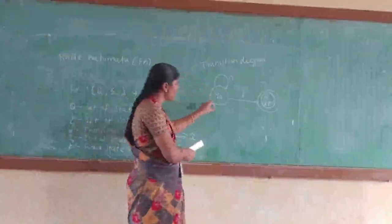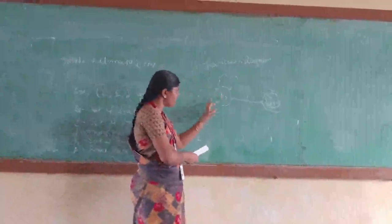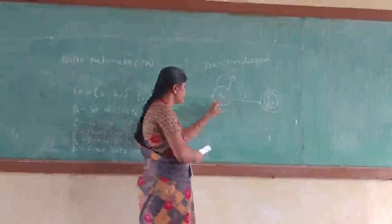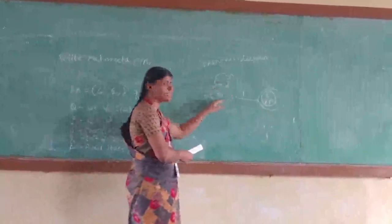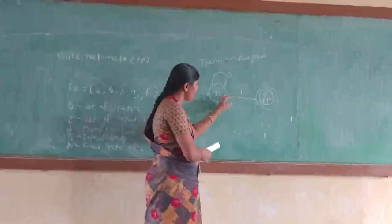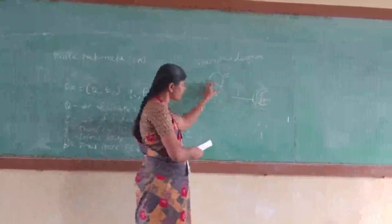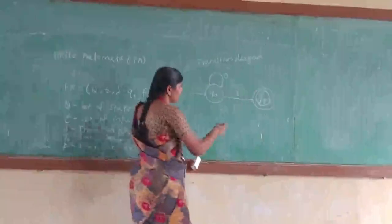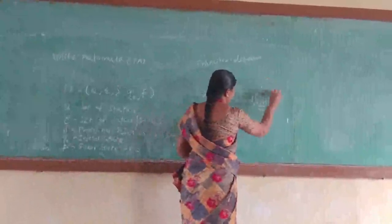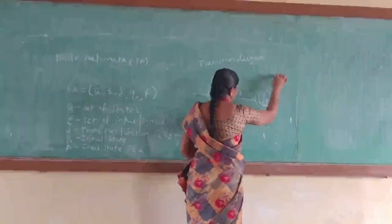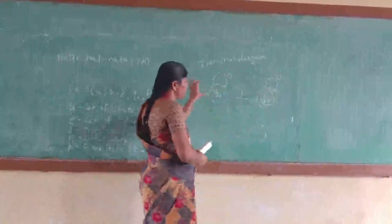From this transition diagram, we can understand: q₀ is the initial state and also the final state. On input 0, it goes to the same state; on input 1, it also goes to the same state. This is the transition diagram representation.